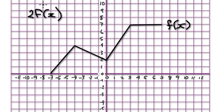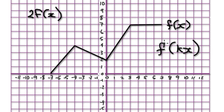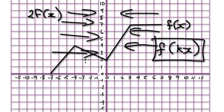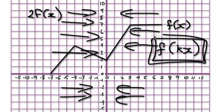So get yourself some graph paper and sketch 2 f of x. Bear in mind that when you have f of k of x, remember that the graph gets squashed inwards. It gets squashed inwards like this — even down here, it gets squashed inwards.